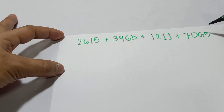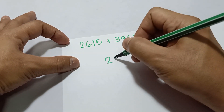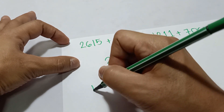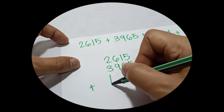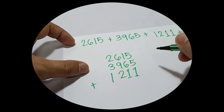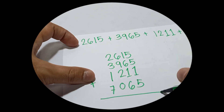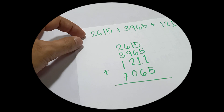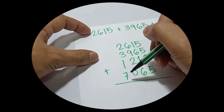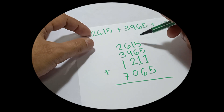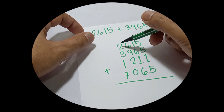We're going to add these up without using the traditional way. Let's regroup them: 2615 plus 3965 plus 1211 plus 7065. Remember, we're not using the traditional way. We start from the left side, and we take the place value of each number: ones, tens, hundreds, thousands.